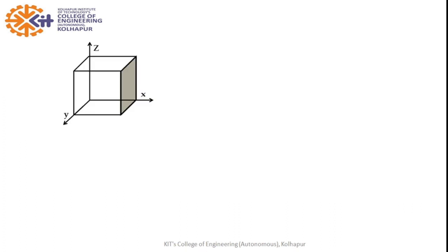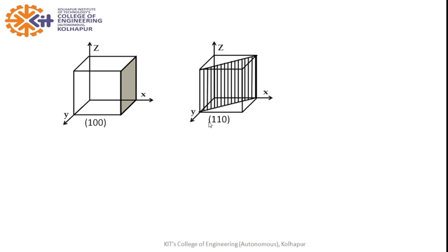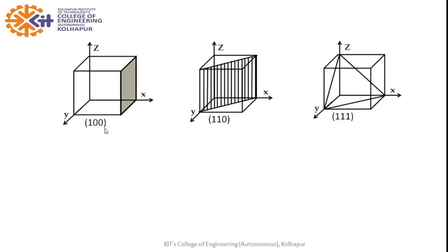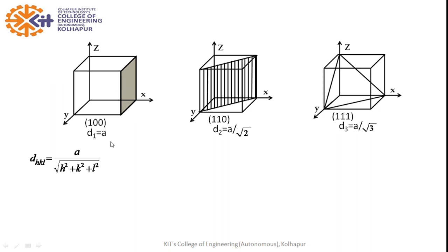Now consider a simple cubic crystal. The 100 plane, the 110 plane, and the 111 plane are all present. In simple cubic all these planes are rich in atoms and give Bragg's reflection. Using the formula d = a / sqrt(h² + k² + l²), where a is the lattice parameter, we get: d1 = a for the 100 plane, d2 = a/√2 for the 110 plane, and d3 = a/√3 for the 111 plane.